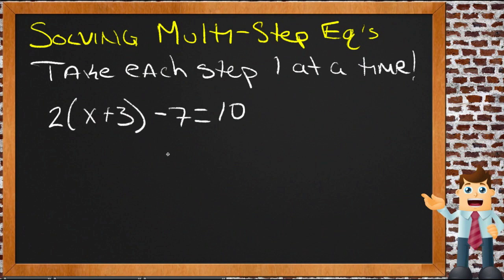But if we take the steps one at a time and use the same rules that we would use if it was a one-step equation, it's not going to be any harder than if we did three one-step equations.